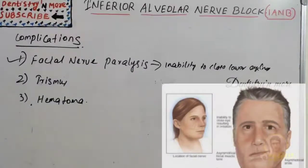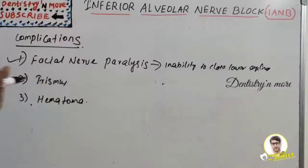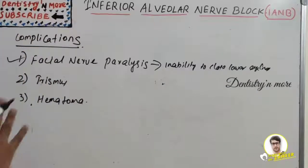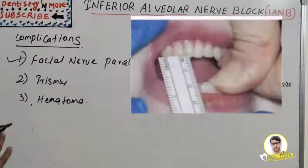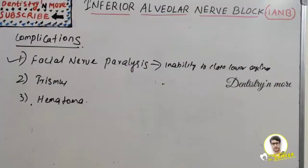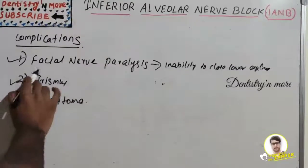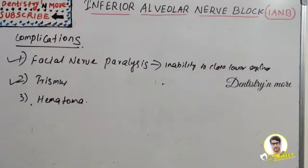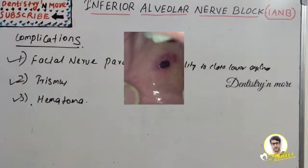Facial nerve paralysis is a transient effect and resolves once the anesthesia wears off. Trismus involves muscle soreness or limited mandibular movement — a slight degree of soreness when opening the mandible is very common with IANB, and more severe soreness can occur if injection technique is improper. Hematoma is a swelling of tissues on the medial side of the mandibular ramus after deposition of the anesthetic solution.